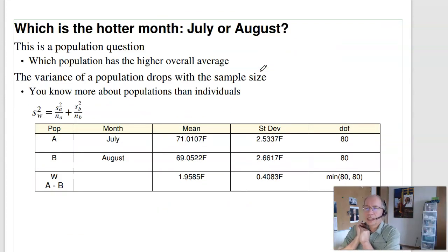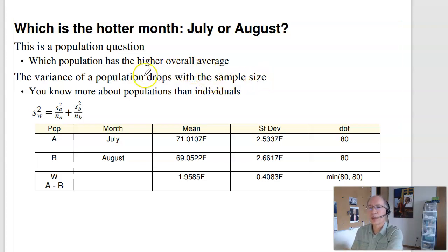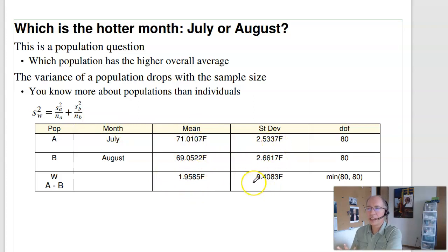That was for an individual year. Suppose I want to know a different question: which is the hotter month — July or August? If I had an infinite number of data points, July would have an average and August would have an average — which one is bigger? For populations, sample size comes into play. When I calculate the variance, I divide by the sample size for A and B. The mean stays the same — just A minus B — but the standard deviation changes by the square root of the sample size.